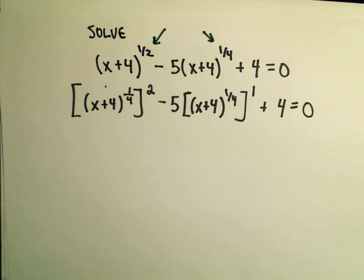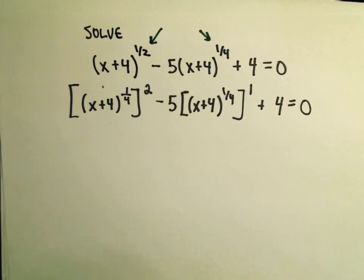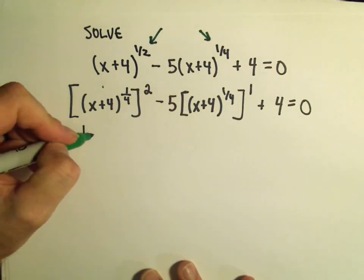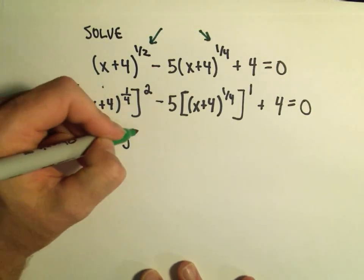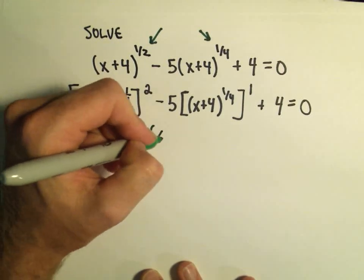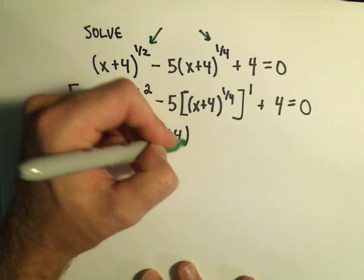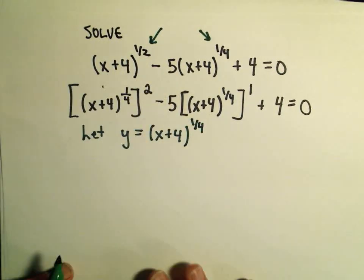So I've kind of done what seems like an unnatural relabeling. But the idea is, if I, again, kind of do a substitution, if I say, let's let y equal this quantity x plus four raised to the one-fourth.